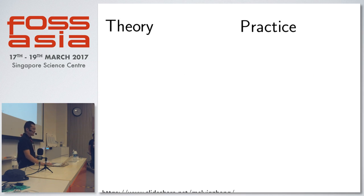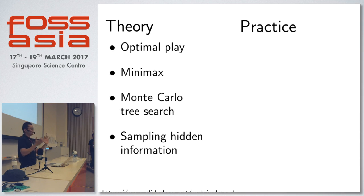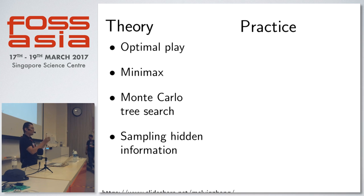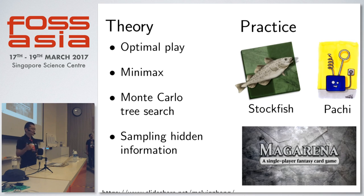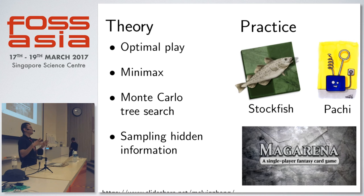To summarize: the key algorithms are optimal play with minimax, cutting off at a level and using heuristic scores; Monte Carlo Tree Search using random simulations; and sampling hidden information for imperfect-information games. The three open-source projects discussed are Stockfish for chess, Pachi for Go, and Mage Arena for Magic: The Gathering, each using these techniques. Slides are available on SlideShare. Thank you.